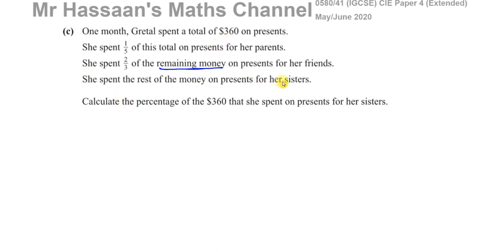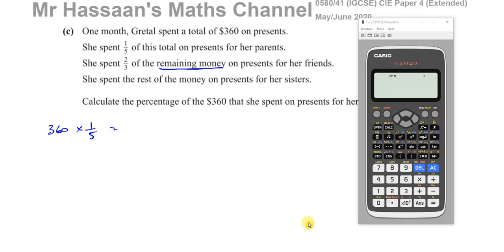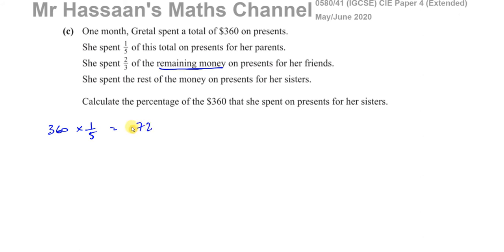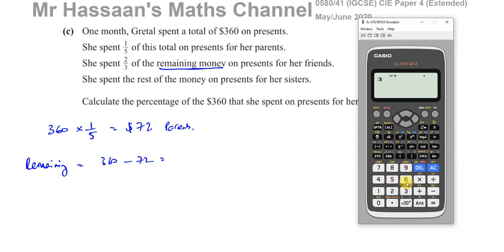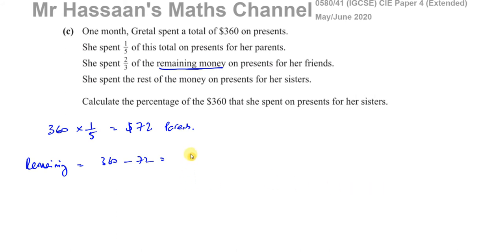She spent the rest on presents for her sisters. Calculate the percentage of $360 she spent on her sisters. The best approach is to work with amounts. One-fifth of $360 = $72 on her parents. The remaining amount is $360 minus $72 = $288 remaining.